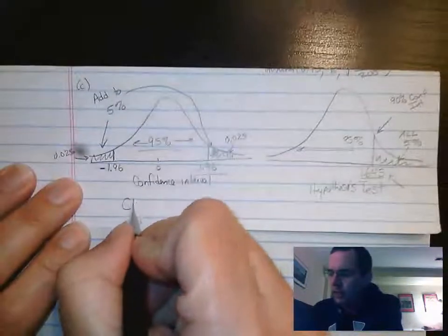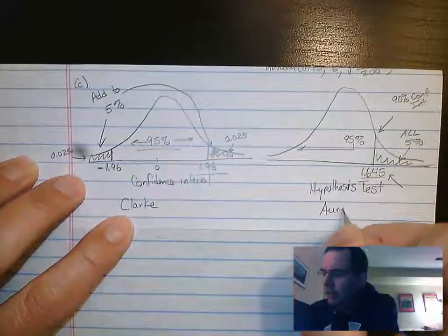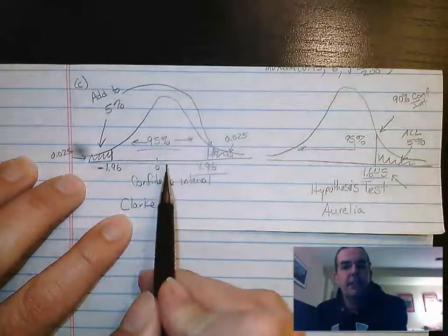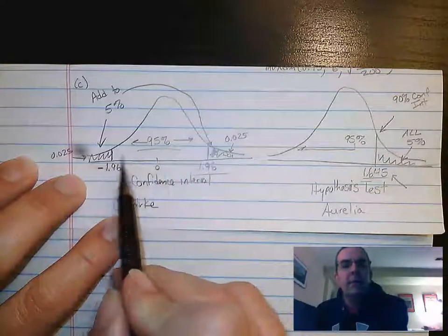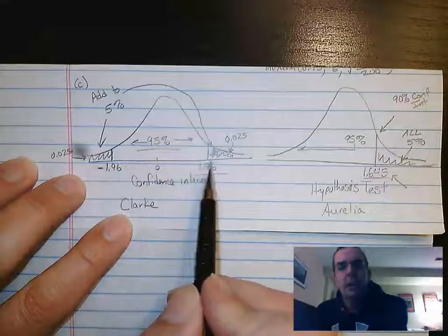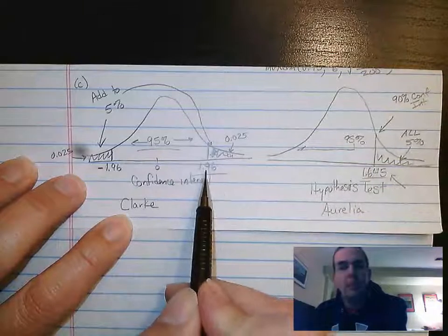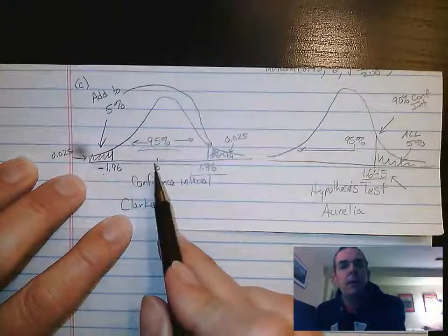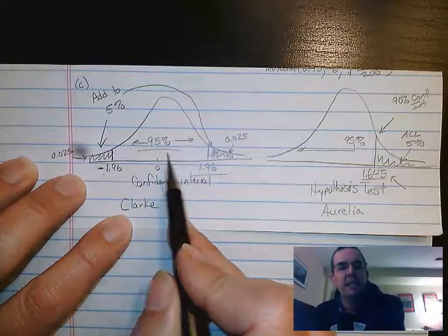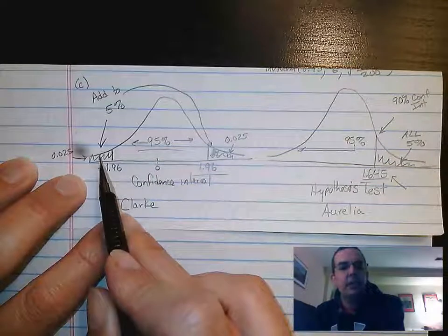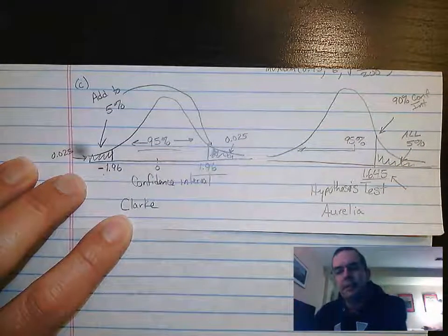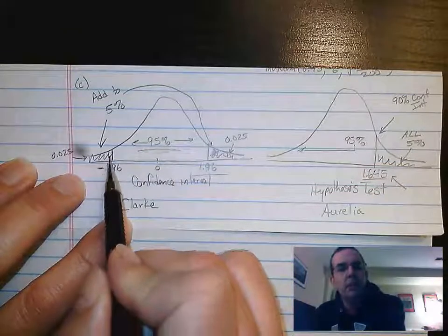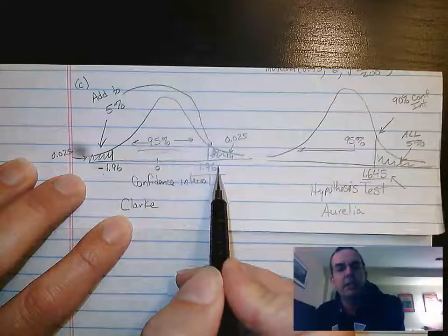What we have over here is what Clark did — the confidence interval. On the right side is what Aurelia did — the hypothesis test. With Clark's 95% confidence interval centered at the mean, in this case zero, the critical values are 1.96 and negative 1.96. That means 95% is between these two lines, and the remaining 5% is equally split: 0.025 on each side. That's why an interval is by definition two-sided. The labels should show 95% in the middle, 0.025 and 0.025 on the tails, and negative 1.96 and 1.96 as the critical values.